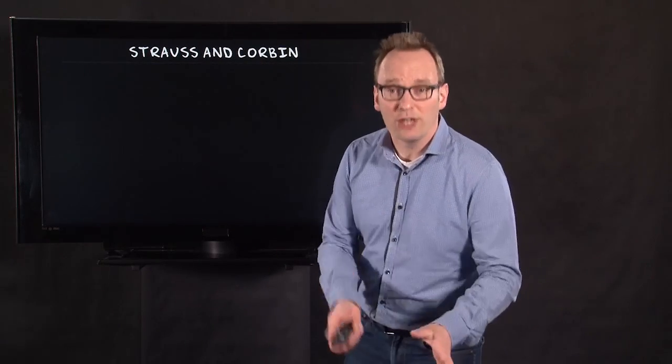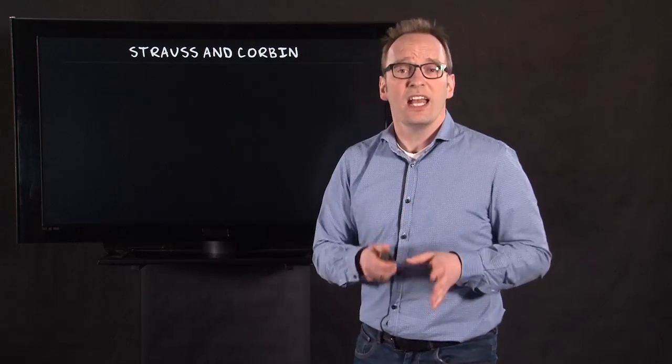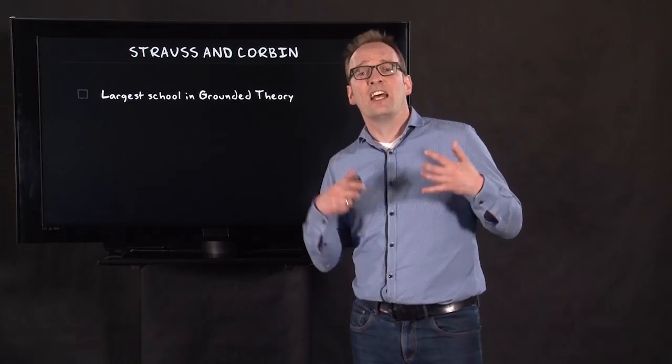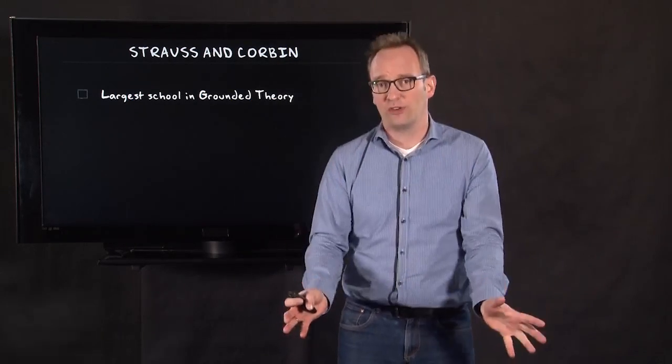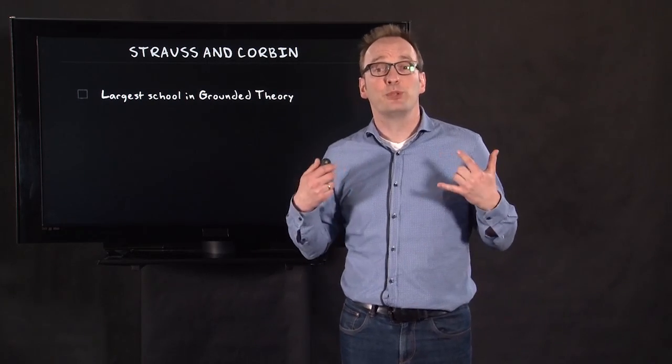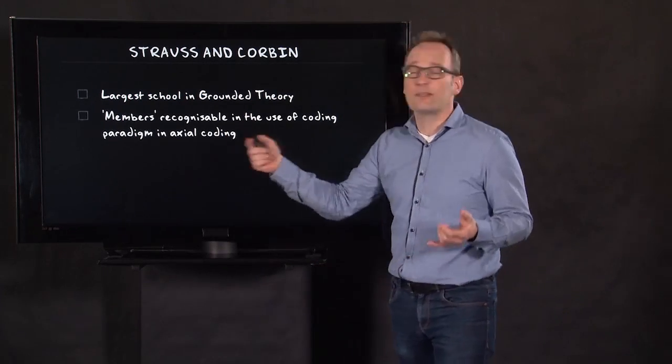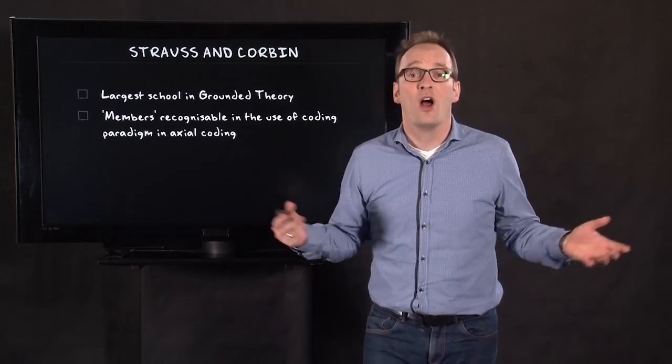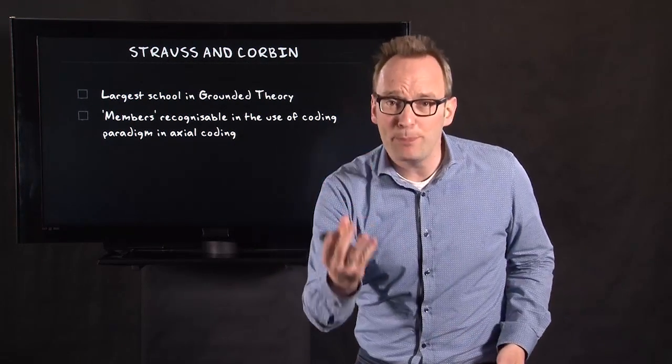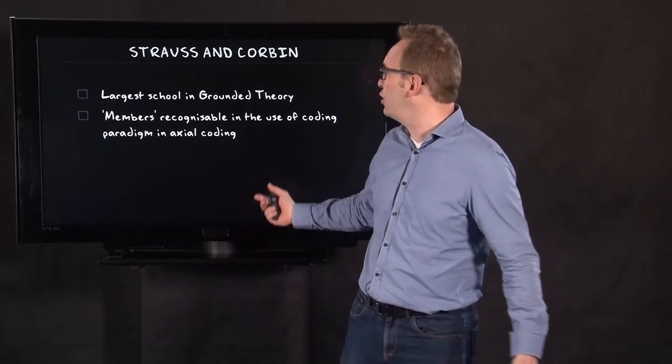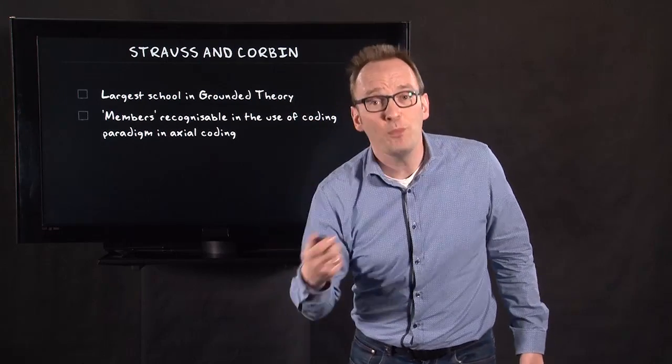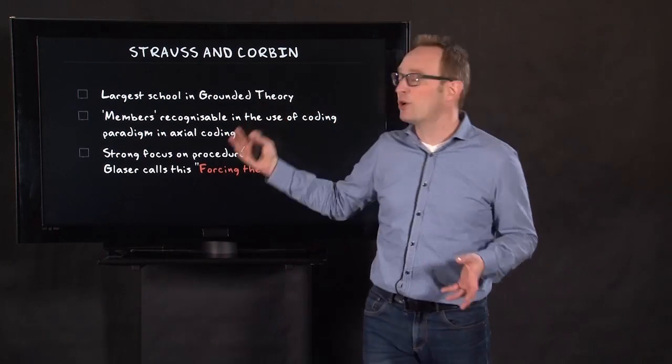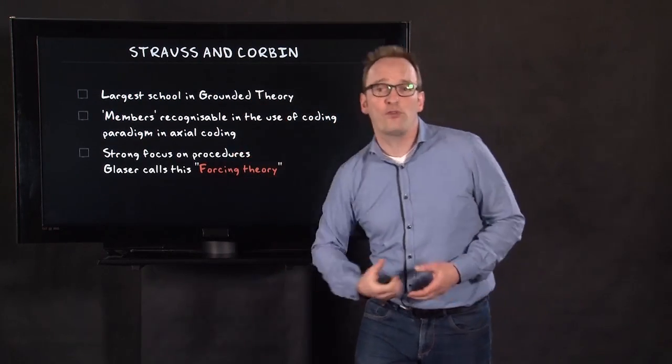The first version of Grounded Theory I would like to discuss is the version by Strauss and Corbin. Anselm Strauss and Juliet Corbin in the late 80s wrote several publications in which they proposed a form of Grounded Theory that is pretty prescriptive. We can easily recognize members of this school because many people influenced by Strauss and Corbin use axial coding. This late 80s book had a very strong focus on procedures.